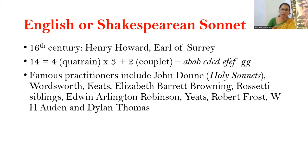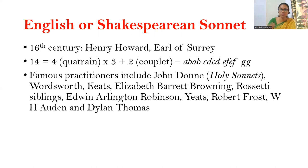A quatrain is a four-line stanza and a couplet is a two-line stanza. Here we have three quatrains, which make 12 lines, along with a concluding couplet, following the rhyme scheme ABAB CDCD EFEF GG.